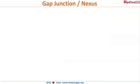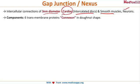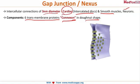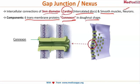Gap junctions are intracellular connections of 3 nanometer diameter. They are present especially in the heart — in the intercalated discs — as well as in smooth muscles and neurons. The most important location is the intercalated discs of the heart. Gap junctions have 6 transmembrane proteins called connexins, arranged in the shape of a donut; this complex is called a connexon.